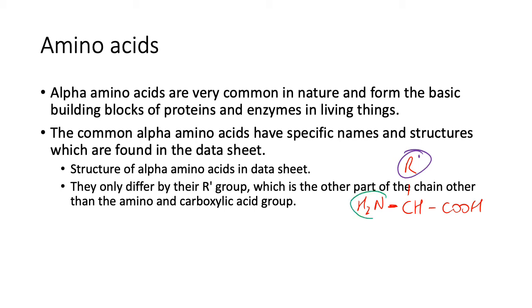You have your amine group, your carboxylic acid group, and another hydrogen which kind of goes down there. But then this part here is the R' group, which is different for each different amino acid. That's what makes them all different. We're going to deal with mainly alpha amino acids in this course.